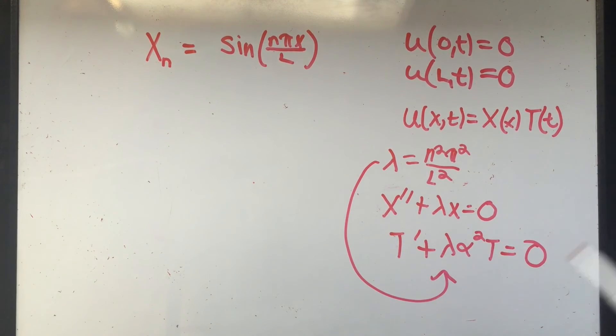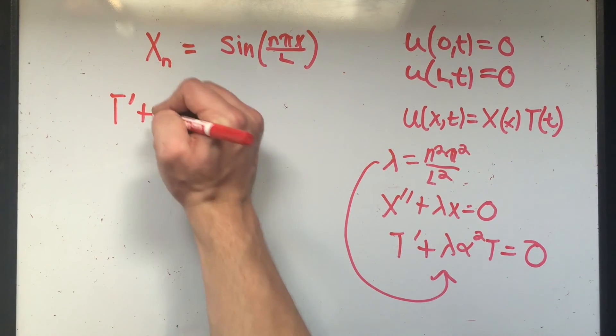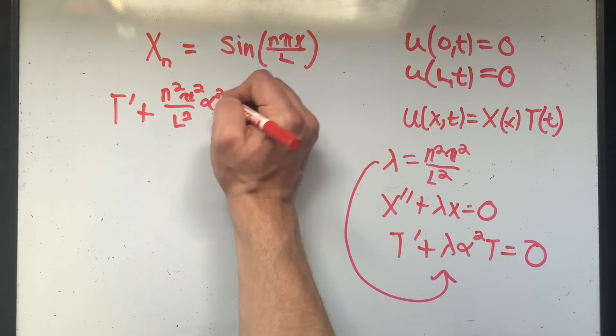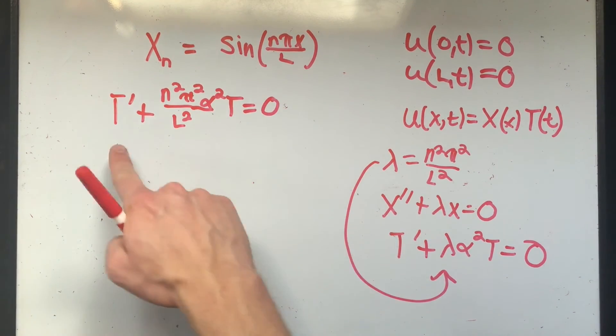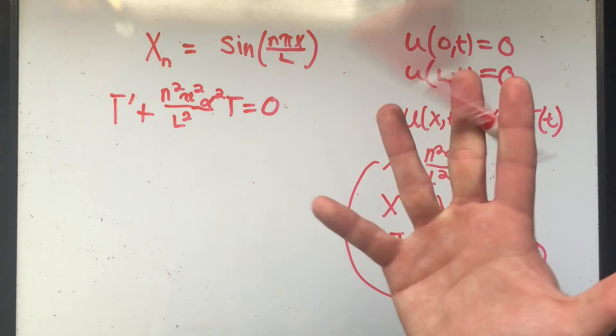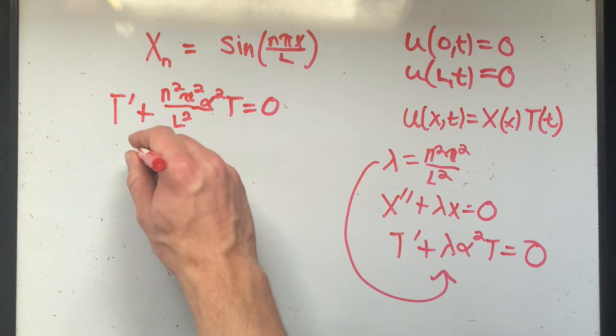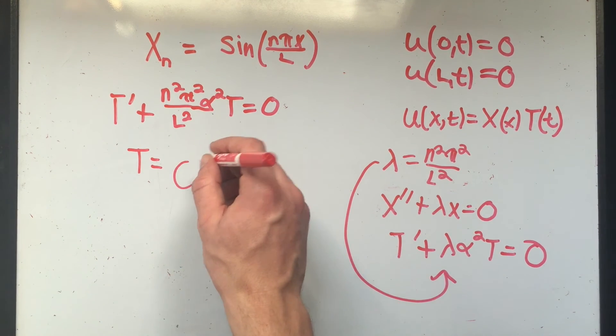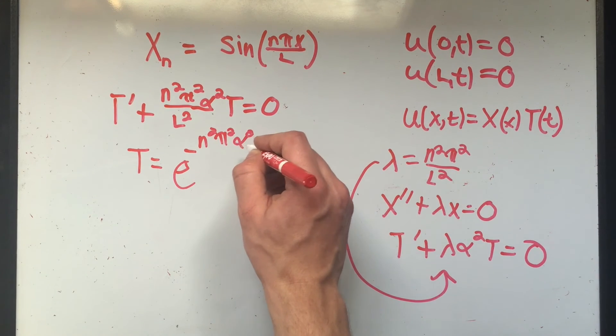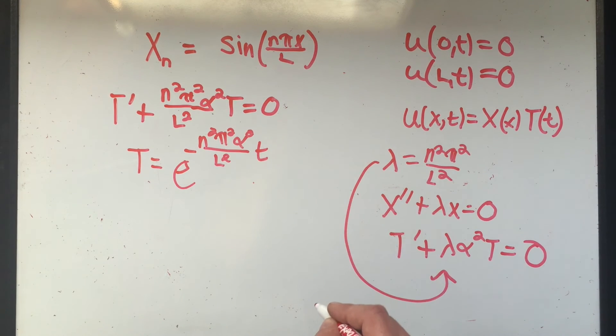It should be somewhere nearby. But if this is lambda, I can plug that in for here. That would be T prime plus lambda, that's n squared pi squared over L squared times alpha squared times t. This is just a regular linear first order differential equation, which you should be pretty good at solving by now. And the solution to this, I'm not going to go through it. If you want to see how to solve first order linear differential equations, I'll either make a video or somebody else has a video. But the solution to this is t equals e to the minus that thing. n squared pi squared alpha squared over L squared times t. Fantastic.